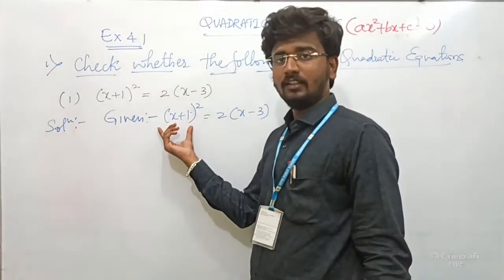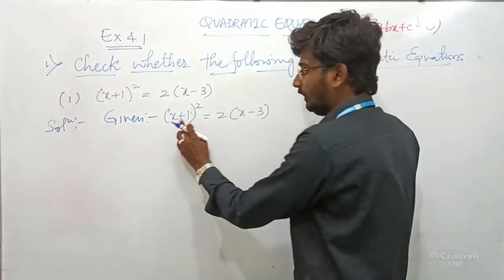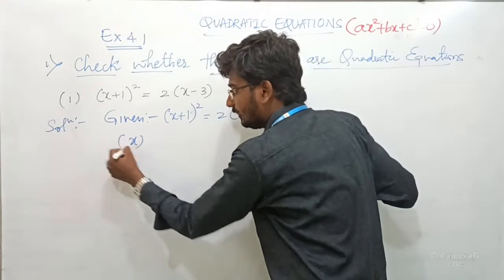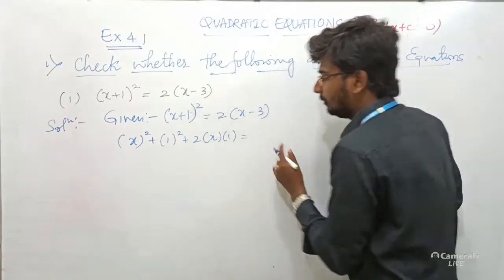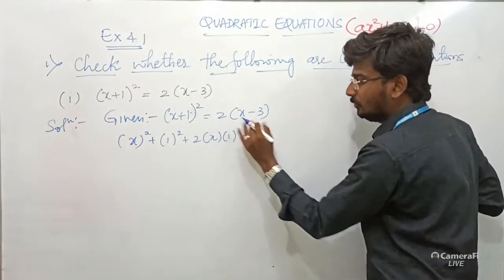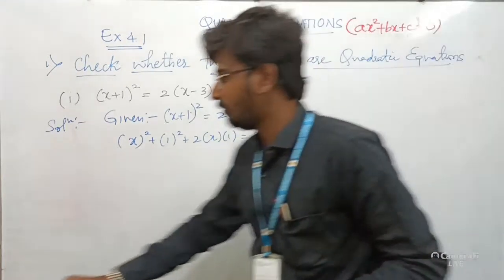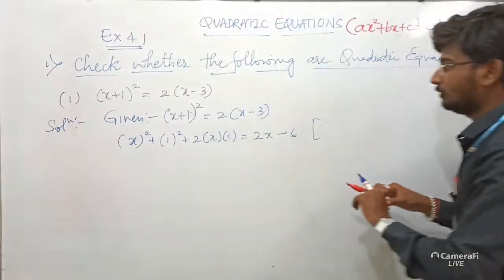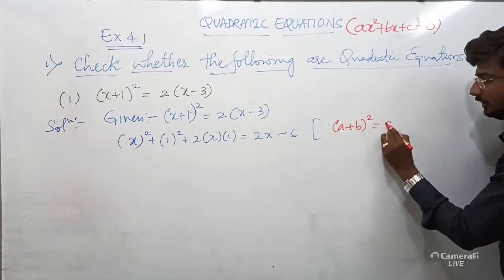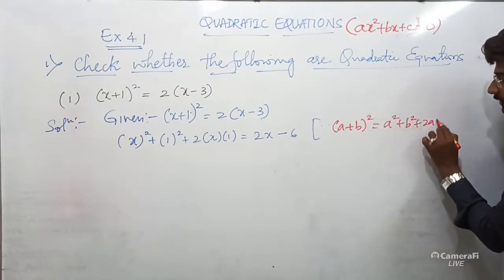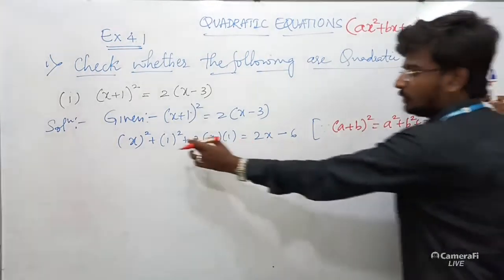This is in the form of (A + B)². What is (A + B)²? It equals A² + 2AB + B². Applying that formula: A² + 2AB + B² = 2·X − 2·3, which gives 2X − 6. So expanding the left side: X² + 1 + 2X = 2X − 6.